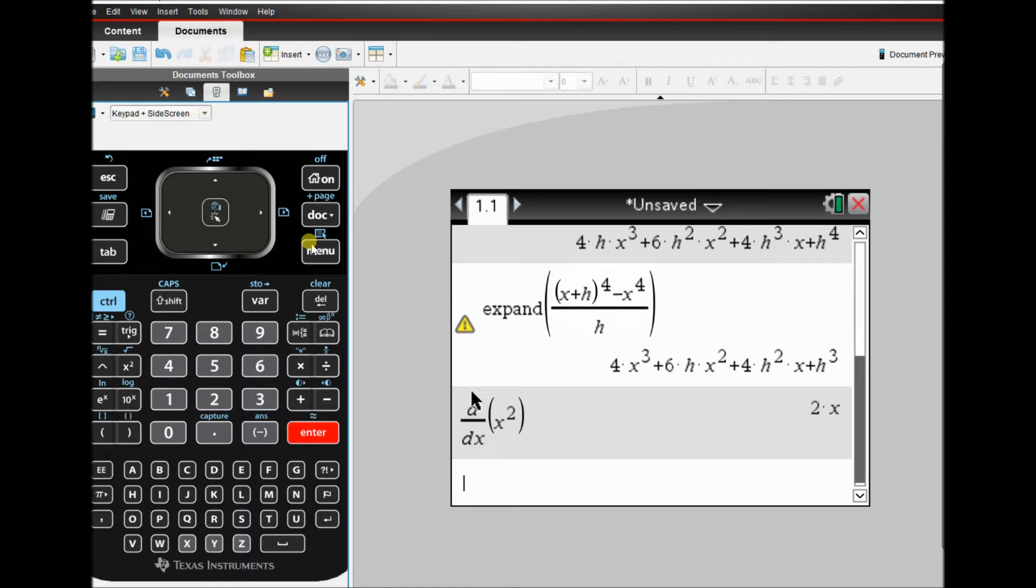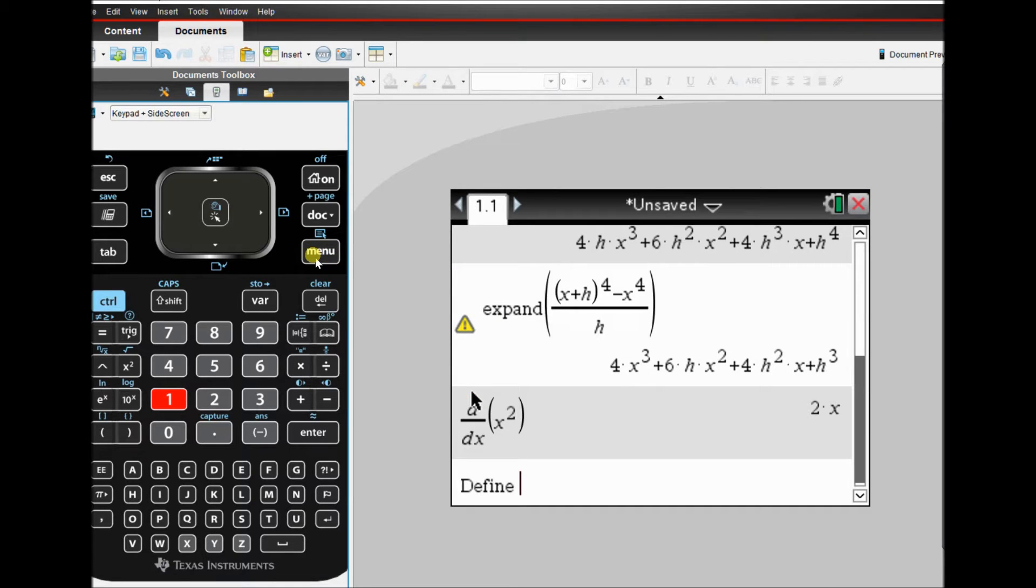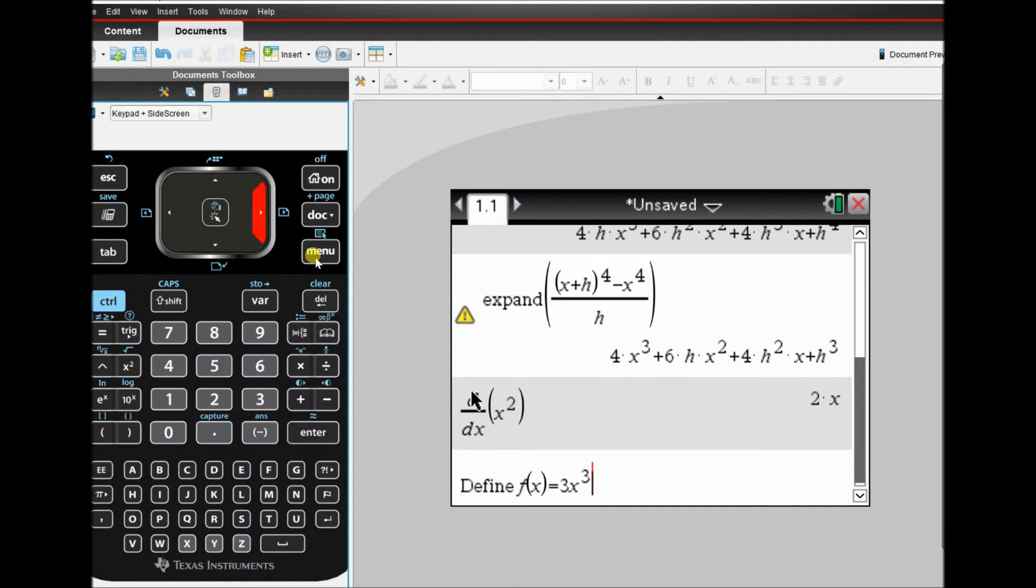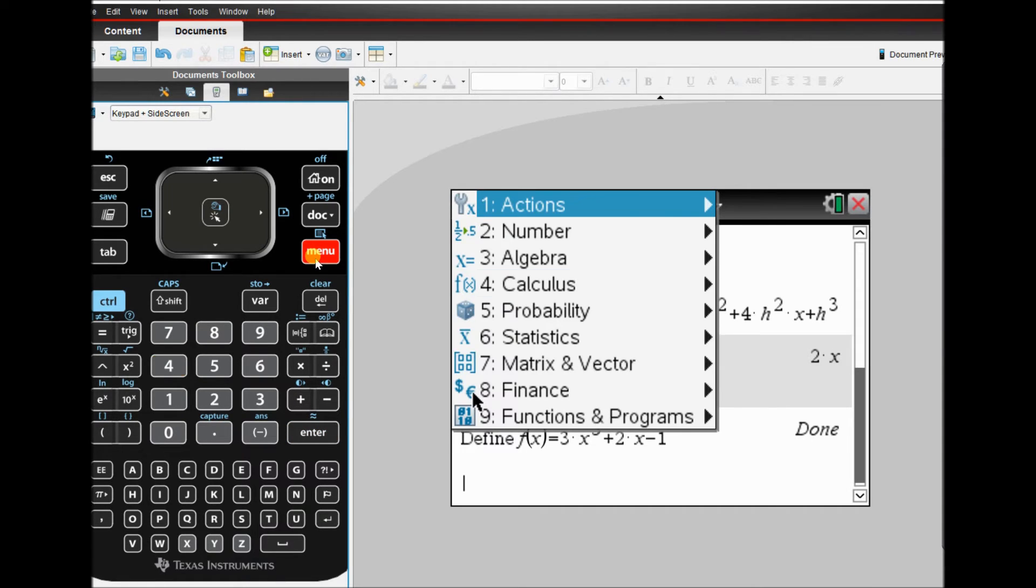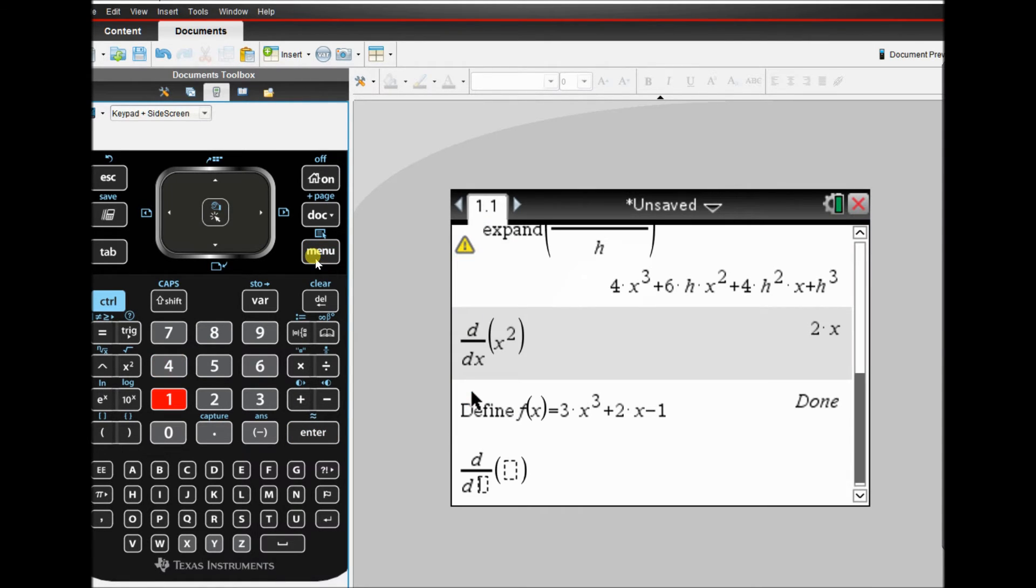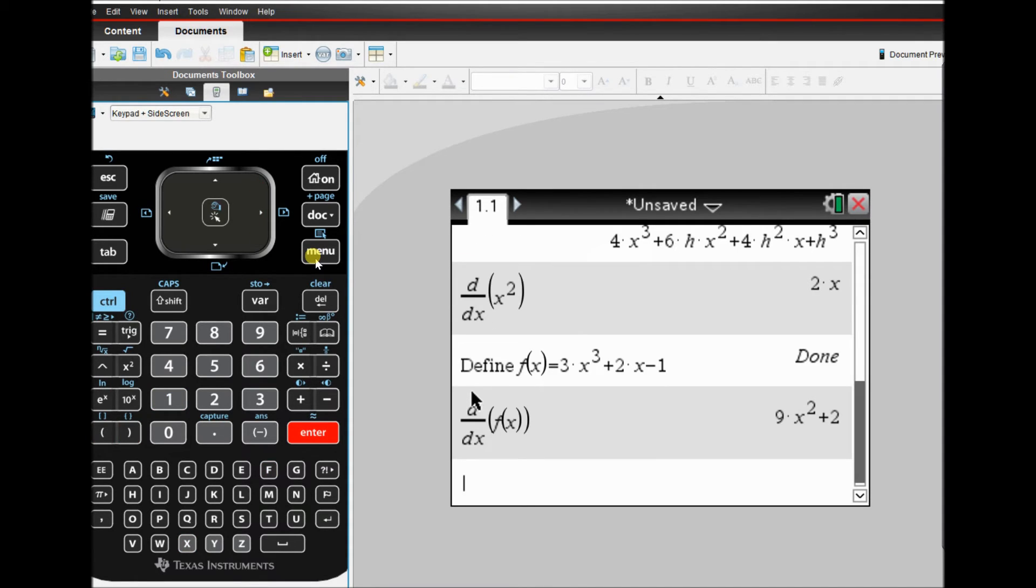If you're using a function multiple times, you can use define. And we get defined by going menu 1 1. I then define f of x is equal to, can be something scary looking, or overly scary looking, pressing enter. And then when you do find the derivative, so menu, calculus, derivative. You can simply type f of x, which is kind of a nice tool.